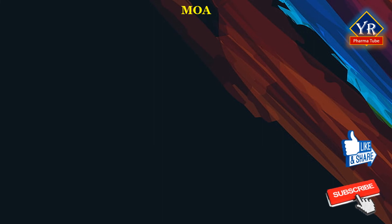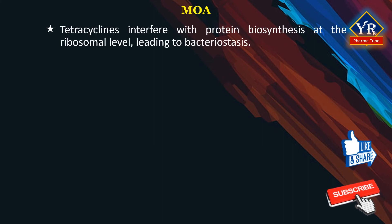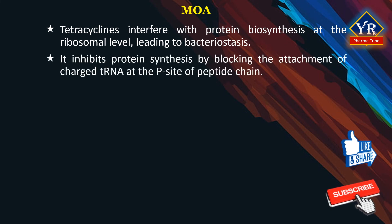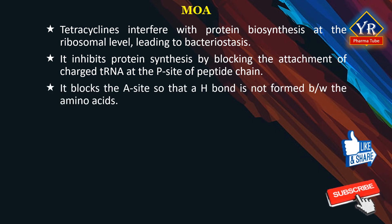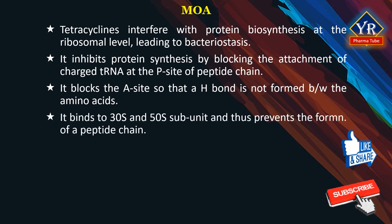Mechanism of action of tetracyclines. The tetracyclines of clinical importance interfere with protein biosynthesis at the ribosomal level, leading to bacteriostasis. Tetracycline inhibits protein synthesis by blocking the attachment of charged tRNA at the P-site peptide chain. Tetracycline blocks the A-site so that a hydrogen bond is not formed between the amino acids. Tetracycline binds to the 30S and 50S subunits of microbial ribosomes, thus preventing the formation of a peptide chain.